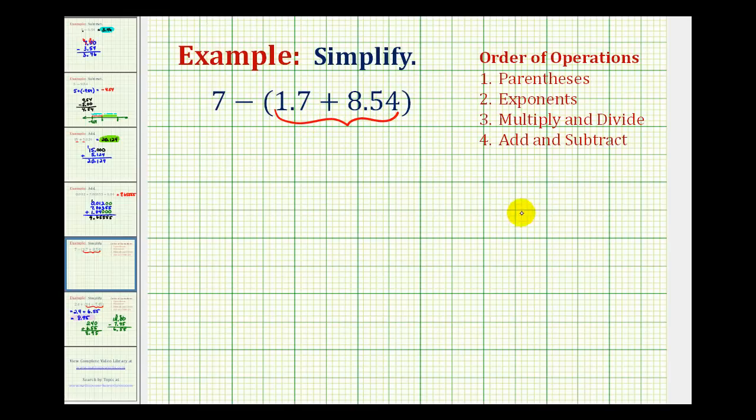So we'll have 1.7 plus 8.54. So notice how we have the ones, the tenths, and the hundredths.